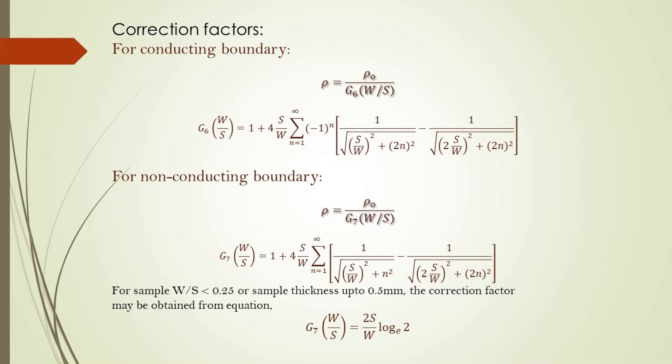If the value of w/s is less than 0.25 — that is, if the sample thickness is up to 0.5 mm — then we can simplify the summation by neglecting higher terms, and g7 can be approximated as (2s/w) × ln(2). After obtaining the set of voltage and current values and calculating ρ₀ = V/I × 2πs, we divide this value by g7 to get the corrected resistivity.